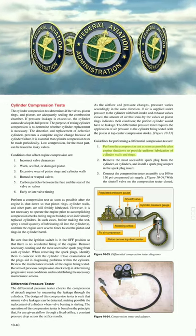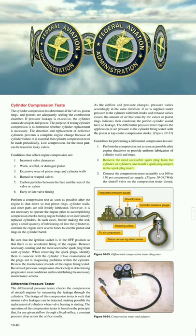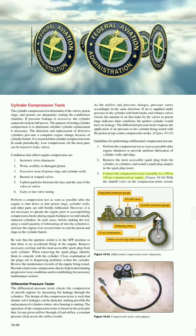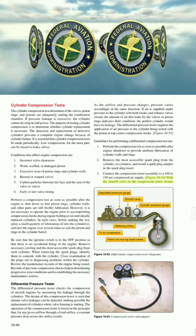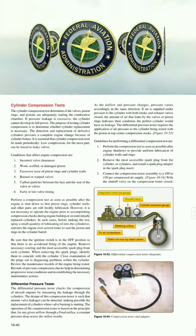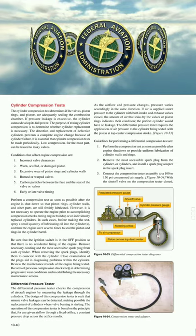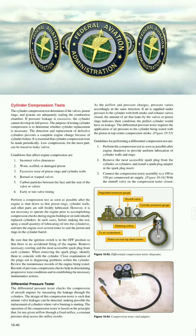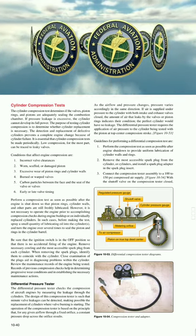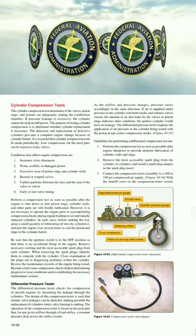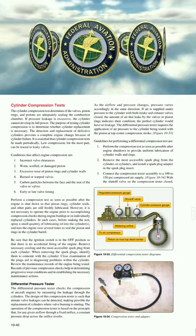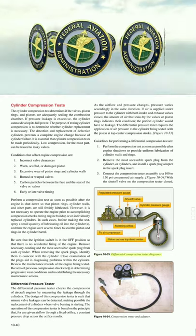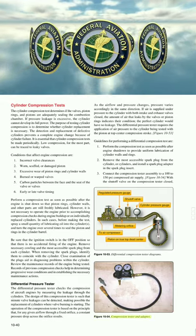Guidelines for performing a differential compression test: (1) perform the test as soon as possible after engine shutdown; (2) remove the most accessible spark plug from each cylinder and install a spark plug adapter; (3) connect the compression tester assembly to a 100–150 psi compressed air supply with the shutoff valve closed; (4) adjust the regulator to obtain 80 psi; then open the shutoff valve and attach the air hose quick-connect fitting to the spark plug adapter, which automatically maintains 15–20 psi in the cylinder when both valves are closed.